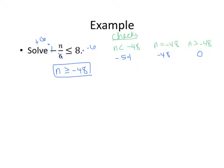For negative 54: we have negative negative 54 over 6, less than or equal to 8. The two negatives make a positive, and 54 divided by 6 is 9. Is 9 less than or equal to 8? No — that's false.